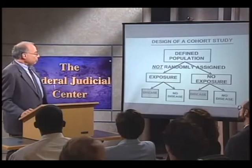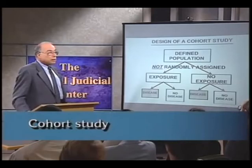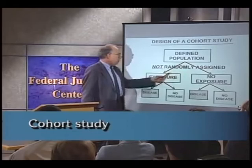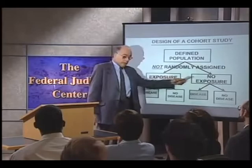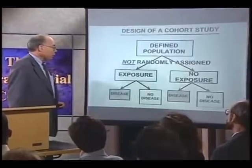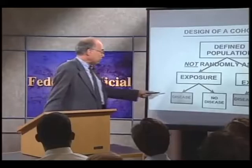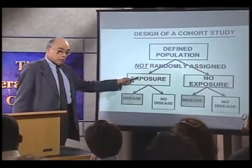If we're not able to randomly assign people, we have the following type of study called a cohort study. A defined population, not randomly assigned, but self-selects or is assigned by other people to exposure or non-exposure. People, for example, may work in a certain industrial plant, while others seek jobs in another plant. We then follow up people who have the exposure and people who don't have the exposure and look at the rate of disease in both groups. If the exposure is related to disease, we would expect to see a greater number of people with disease in the exposed group than in the non-exposed group.